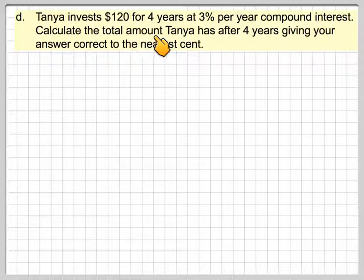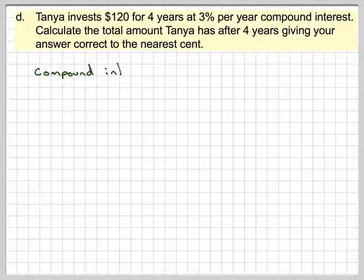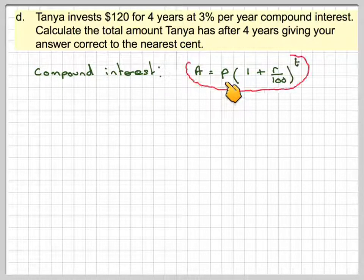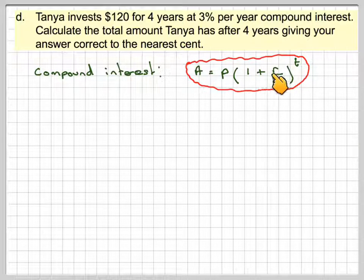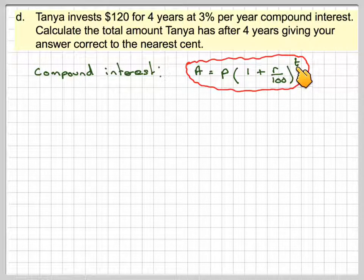Tanya invests £120 for 4 years at 3% per year compound interest. Calculate the total amount Tanya has after 4 years, giving your answer correct to the nearest cent. So the compound interest formula is the amount is the original amount, the principal, times 1 plus R over 100 to the power of T.